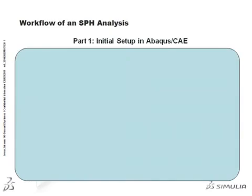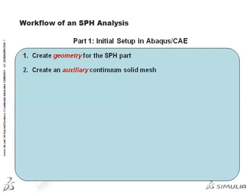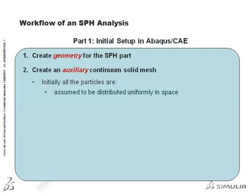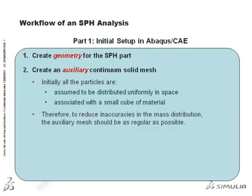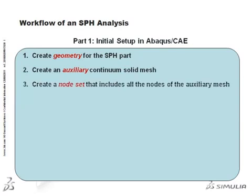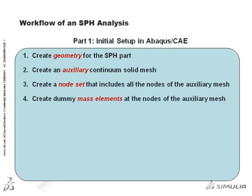Let's take a closer look at the workflow for creating the SPH portion of an Abaqus model. Starting in Abaqus CAE, the first step is to create the geometry for the SPH part. The second is to create an auxiliary continuum solid mesh. The current SPH implementation assumes that all particles are distributed uniformly in space, and that each particle is associated with a small cube centered at the particle. Therefore, to reduce inaccuracies in the mass distribution, the auxiliary mesh should be as regular as possible. Step 3 in the workflow is to create a node set that includes all the nodes of the auxiliary mesh.